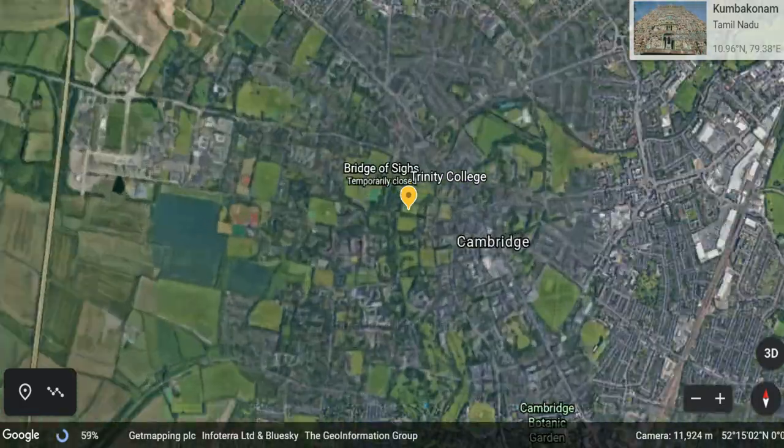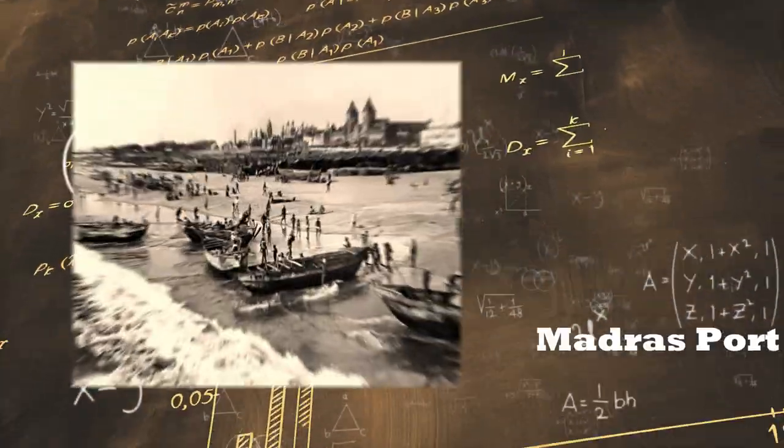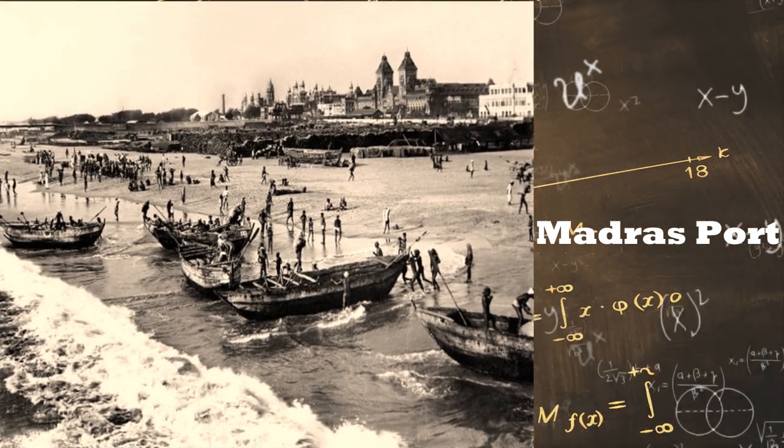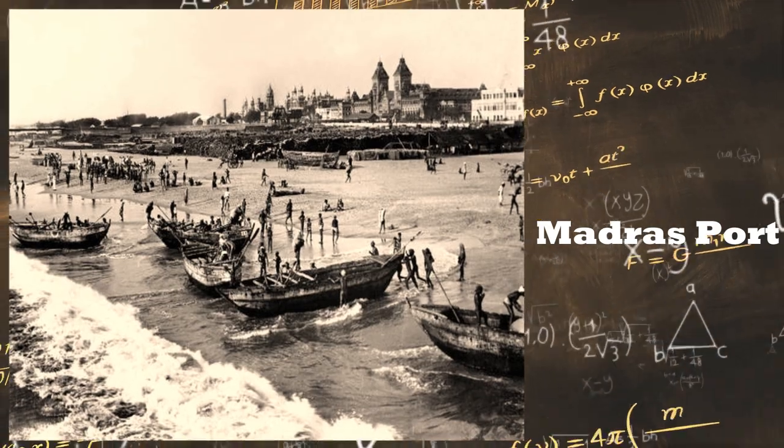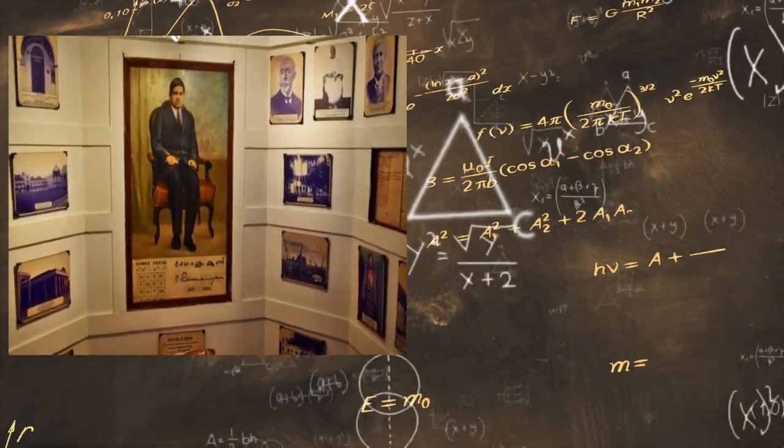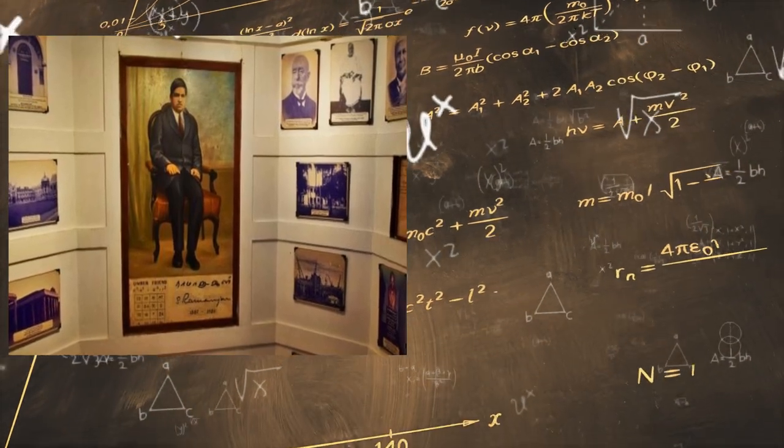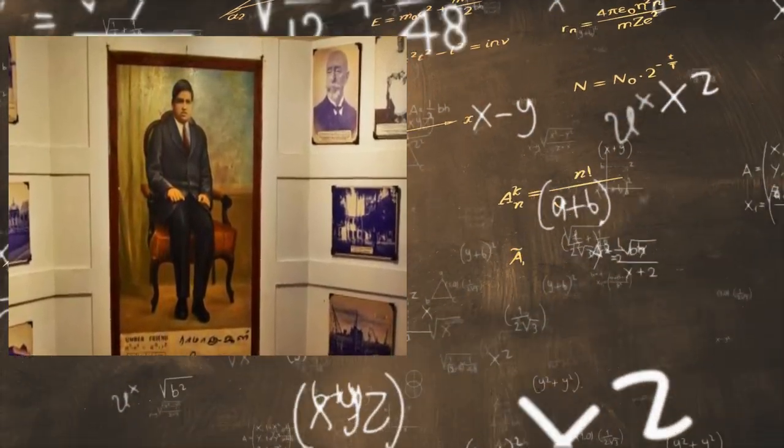This letter was a set of mathematical results including 120 theorems. On May 1, 1913, the 25-year-old Ramanujan formally resigned from the Madras Port Trust office where he was working and joined the University of Madras as a research scholar with a small scholarship during his stay in Cambridge from 1914 to 1919.